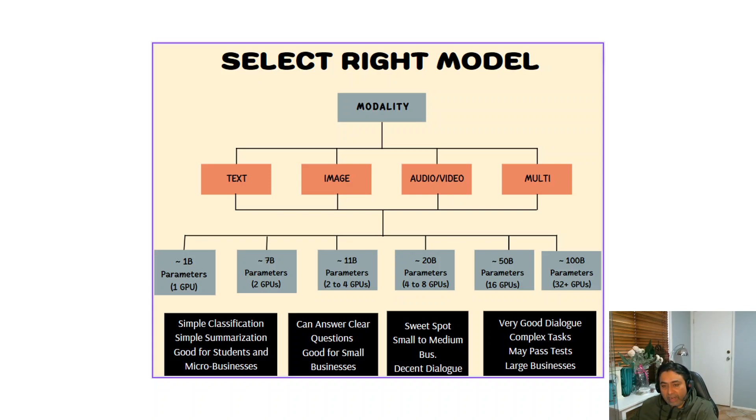If you look at this diagram on your screen, you will see that we are starting from the top. First we have identified the modality - whether our use case is text, image, text to video, text to image, image to video, or image to text. It could be anything. There are a lot of variations out there. Once you have identified that, then you need to select the size of the model - whether it is 1 billion parameter, 7 billion, 11 billion, 20 billion, or 50 billion or even more. Now how do you identify that?